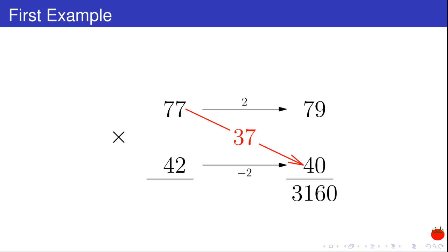Third step. I calculate the difference between the new rounded number with the old number I remembered. 77 minus 40 is equal to 37.